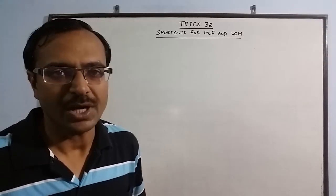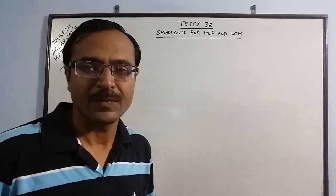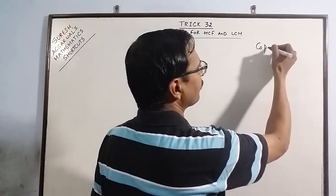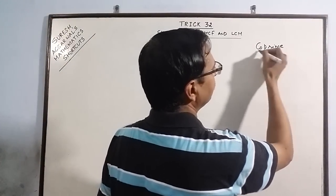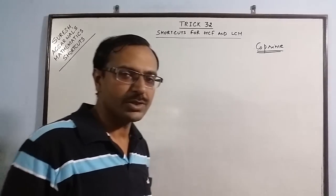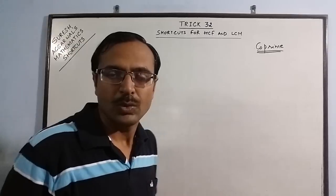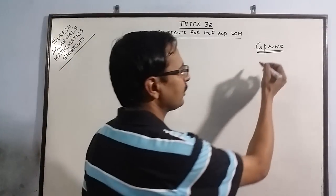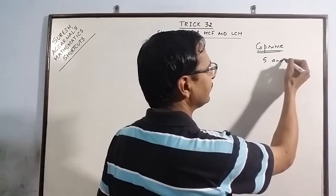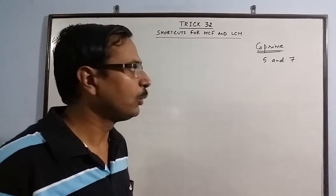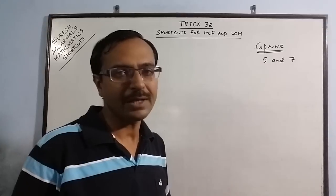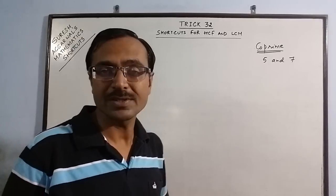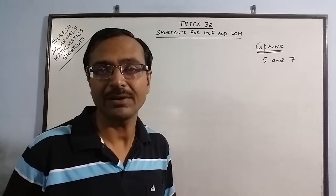The first concept which I'm going to take up is that of numbers which are co-prime. You must have heard of co-prime numbers. Co-prime numbers are those numbers which have only one as their common factor. Suppose 5 and 7. 5 and 7 both occur in the table of only one. So we call them co-prime because they do not have any other common factor other than one.